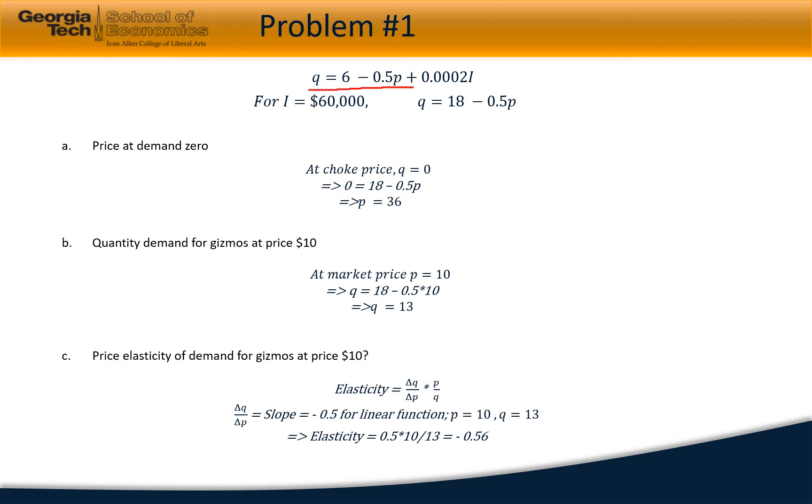Where income is $60,000, q turns out to be 18 minus 0.5p, which is the equation we'll use often in this problem. The first question is what is the price at demand zero, so the price at demand zero is the choke price.